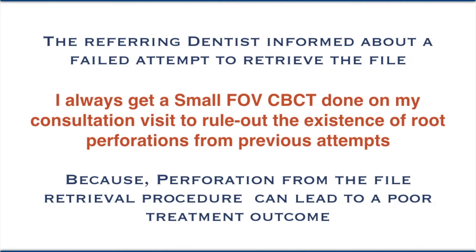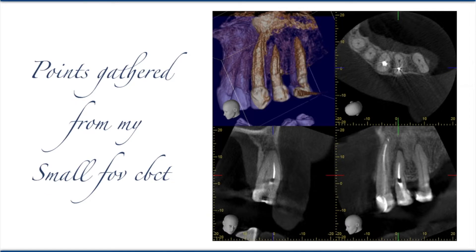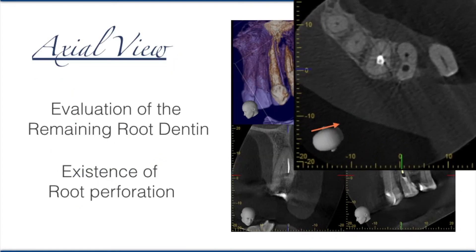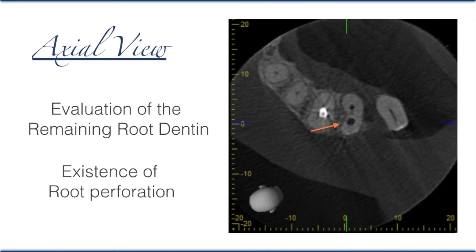From the small field of view CBCT in this case, there is no active infection. Looking at the axial view, I make my sections going from coronal to the apical end and evaluate the remaining root dentin, checking for the existence of root perforation.